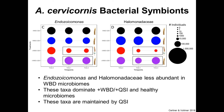A bit more about vibrios and flavobacteria: vibrios are gram-negative gamma-proteobacteria, extremely common marine pathogens linked to many diseases including coral diseases. The flavobacteria are also gram-negative but from the totally different phylum Bacteroidetes — they haven't really been shown, except in a couple of my papers, to be associated with coral disease, but they are opportunistic pathogens of freshwater fish. They seem to be in the corals as well.